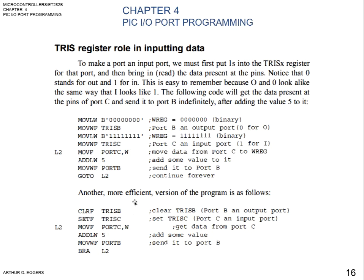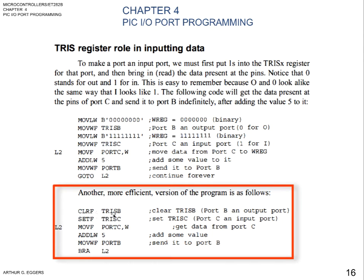The next step is a more efficient version of doing this. In this case, we're going to do a clear of a register — clear tri-state B, making port B an output port. Then we set a value for register tri-state C, making port C an input port. Then move file port C to the working register to get data from port C, add a literal value of 5, move from the working register to port B, and then branch to L2 to loop back and forth.